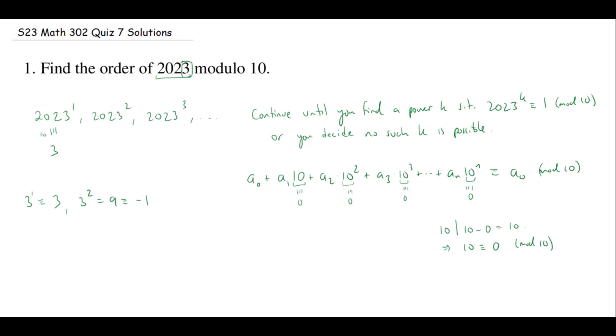Well, because we had a little result in class that told us as soon as we find negative one as a power, then we know that the order we're going to achieve by doubling this power. Now it doesn't mean any time you have three to the K is congruent to negative one that the order is 2K. Just means if this is the first time that the power gives you negative one, then the order will be twice. So immediately from here, three squared congruent to negative one would imply that the order of three is four, twice this power.